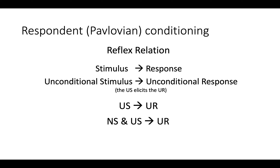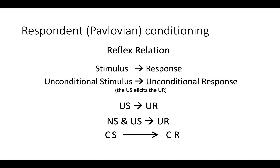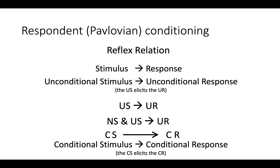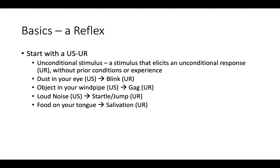If we add a neutral or novel stimulus (NS) to the U.S., and the U.S. produces a U.R., over time what we see is that that neutral stimulus becomes a conditional stimulus that produces the conditional response on its own. The conditional stimulus elicits the conditional response. That's technically an overview of what is conceptually or theoretically going on.